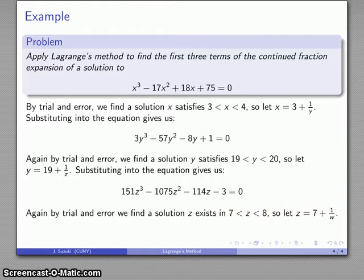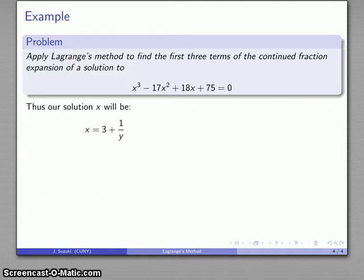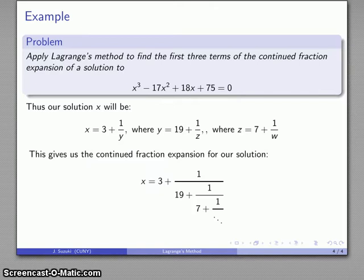I can continue this for as far as I care to. In this particular case, I only care to find the first three terms of the continued fraction expansion. I know that x is 3 plus 1 over y, y is 19 plus 1 over z, and z is 7 plus 1 over w. So taking that into account, my continued fraction expansion is going to look like this: x = 3 + 1/(19 + 1/(7 + 1/w)).